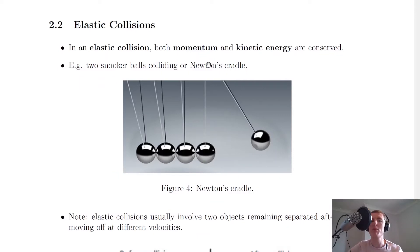So it says here that in an elastic collision, both momentum and kinetic energy are conserved. So this means that both the momentum and kinetic energy stay the same before and after the collision.